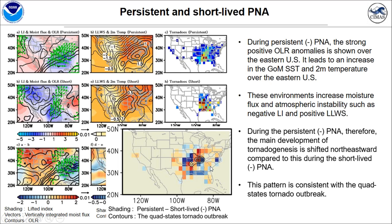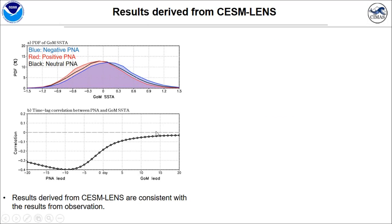Therefore, during the long-lived negative PNA, the main development of tornado genesis is shifted northeastward compared to the short-lived negative PNA case. The difference pattern of tornado genesis between long-lived and short-lived negative PNA cases is very consistent with the cold-state tornado outbreak location. Therefore, the long-lived negative PNA generated a blocking high over the eastern U.S. and Gulf of Mexico, which in turn increased the tornado environmental conditions over the Ohio Valley, where the cold-state tornado outbreak occurred.